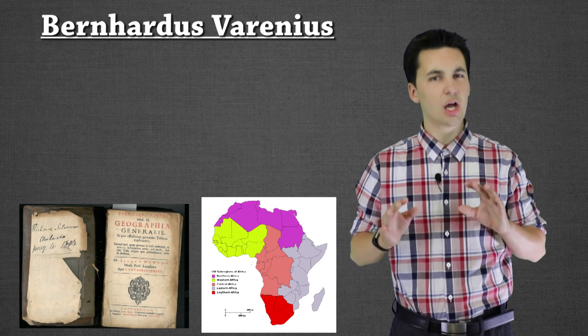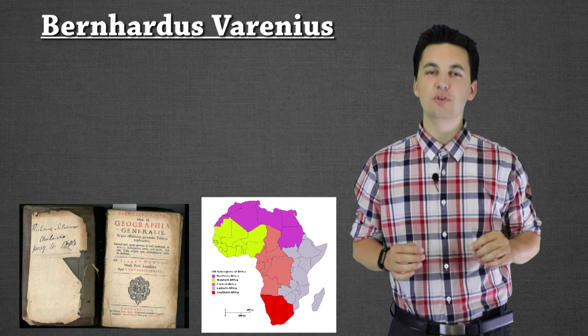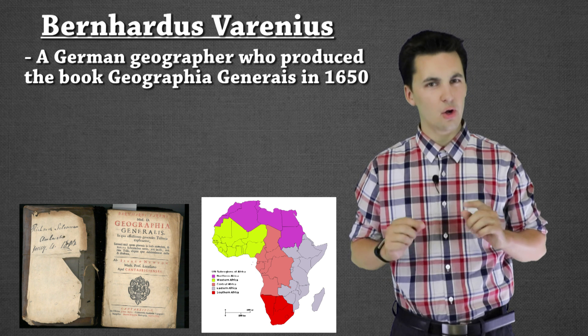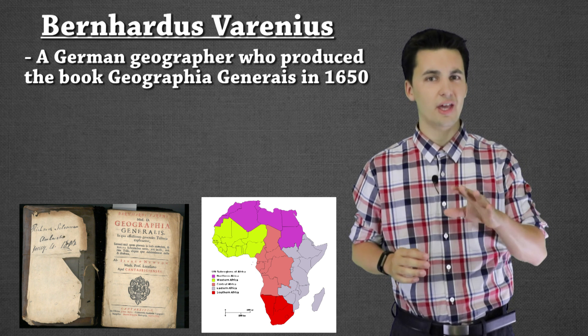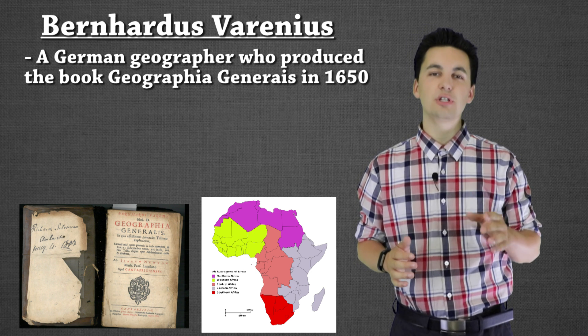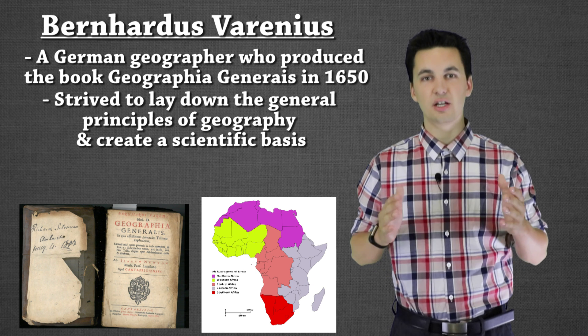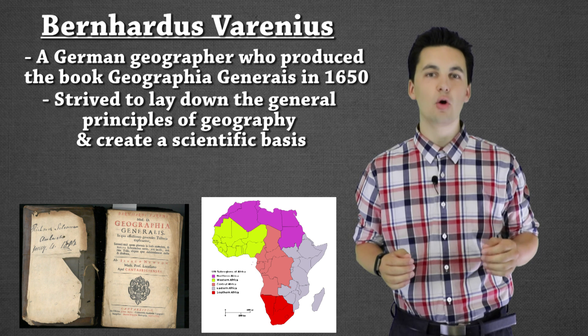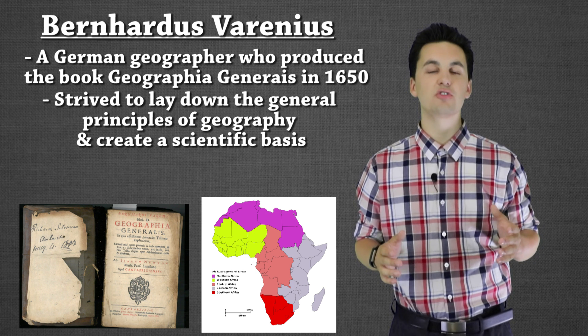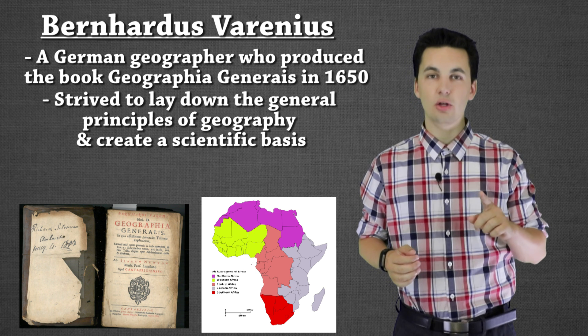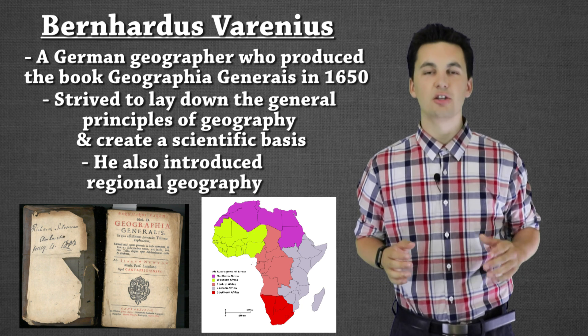We also have new schools of thought coming to the concept of geography. One of the people who introduced the concept of regional geography — instead of just global, which had been the only practice at the time — was Berhardus Varanius. In 1650 he produced the book Geographia Generalis. This was a big deal: he started to create more of a scientific basis for geography, wanting it to be more focused on data collection and analyzing current-day life through what science could prove. So geography started to become more rooted in scientific fact, and regional geography was introduced and began to be practiced.